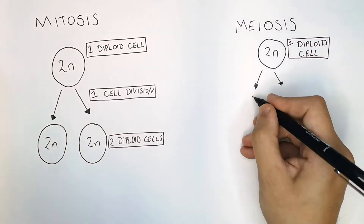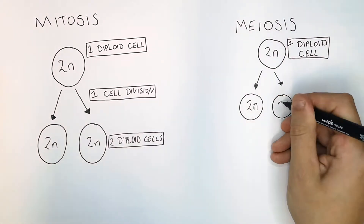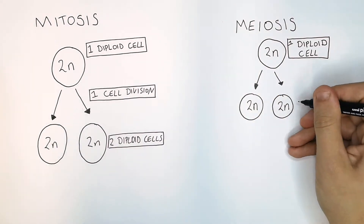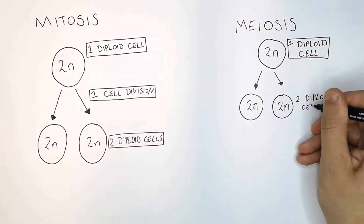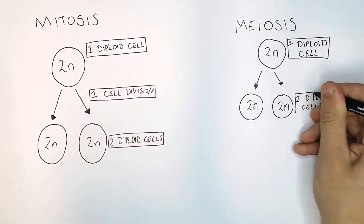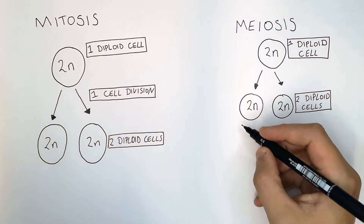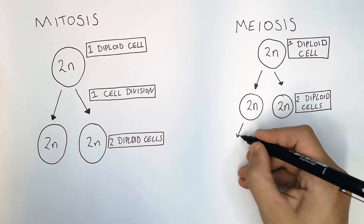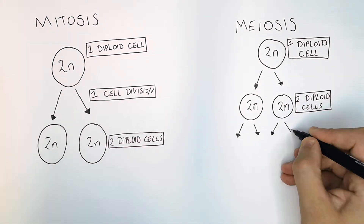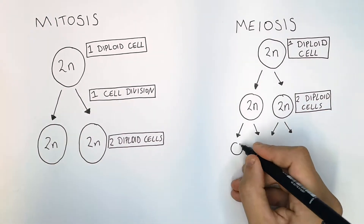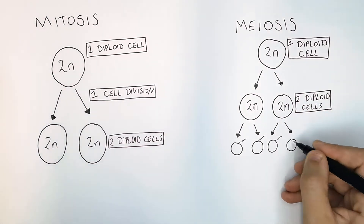It divides for a first time to form two diploid cells. This is where meiosis is different from mitosis: these two diploid cells then divide once more, for a second cell division, forming four gametes.